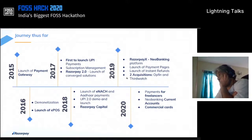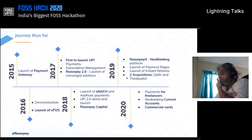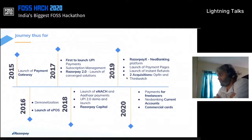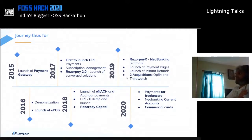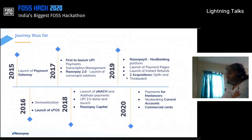We were first to launch UPI payments. UPI is an open platform and open framework. We created something called eNach, which is based on Aadhaar — again an open framework. UPI 2.0 is again an open framework. We then launched Razorpay X, which is a neobanking platform. A bunch of products like payment pages, instant refunds, and a couple of acquisitions.